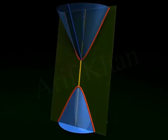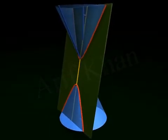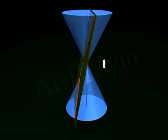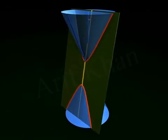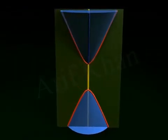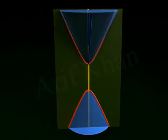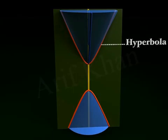However, if the plane intersects the vertical axis at an angle smaller than the vertex angle, the plane intersects both the naps of the cone to form an open curve called a hyperbola, which has two disjoint curves.